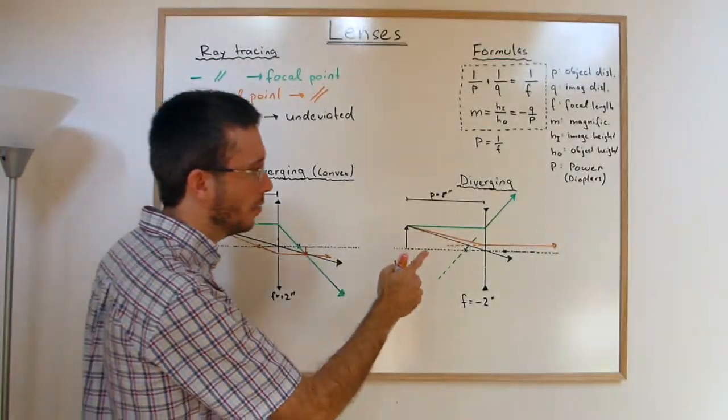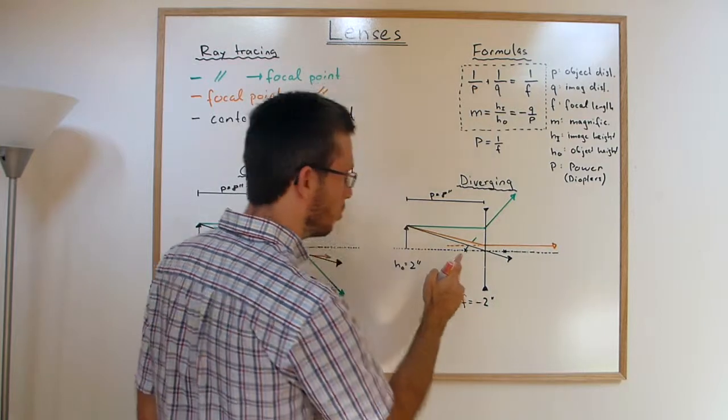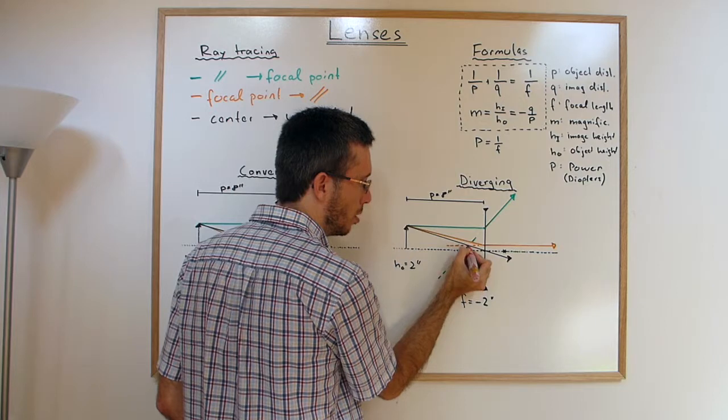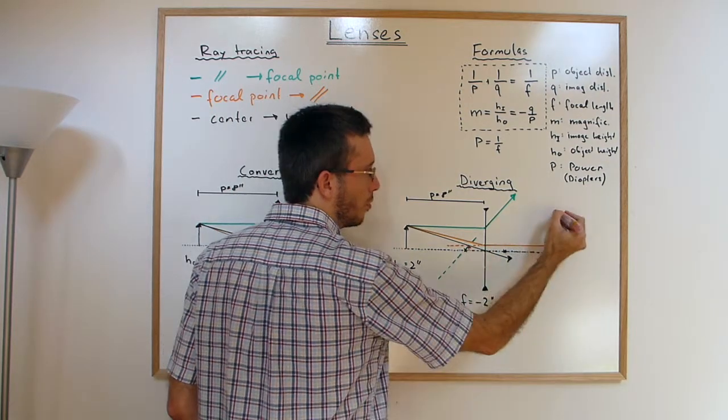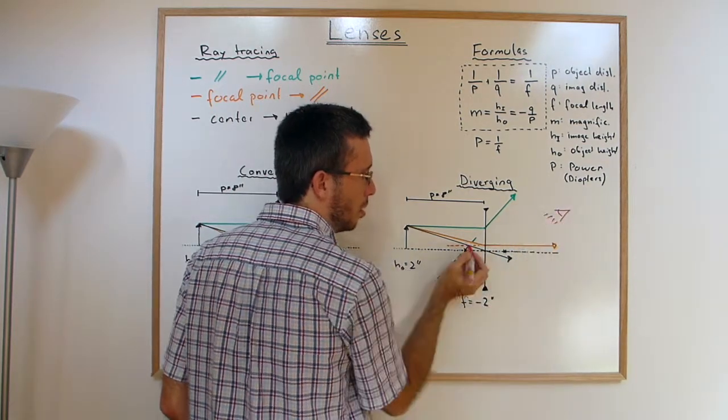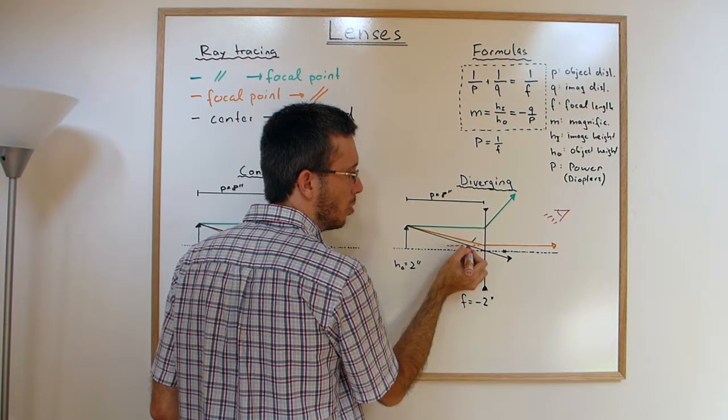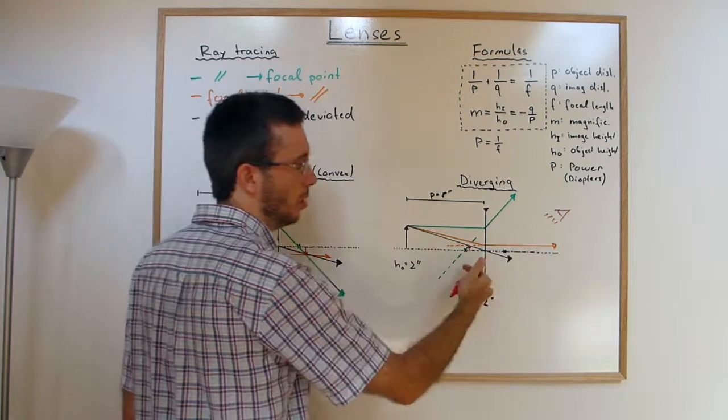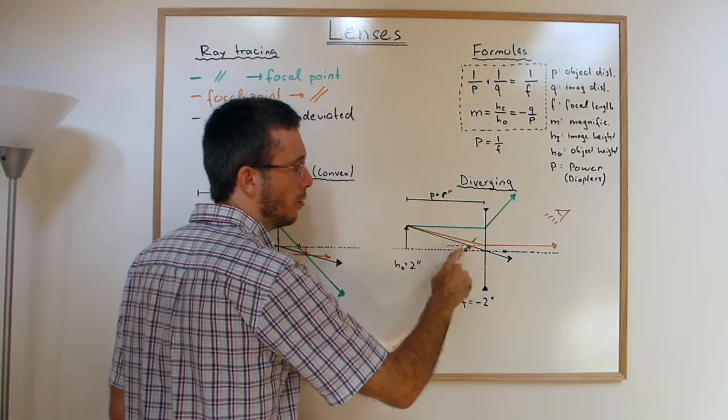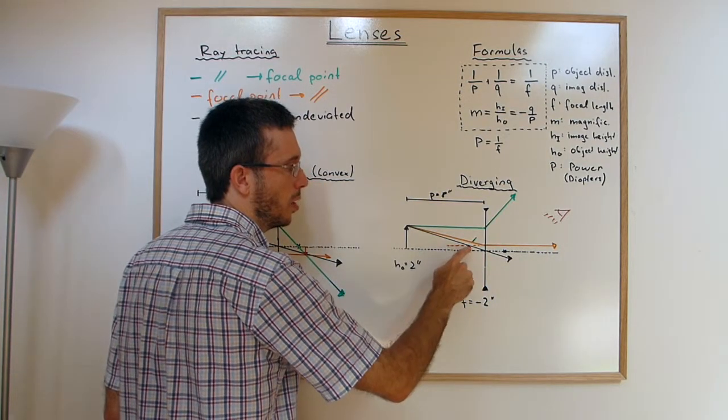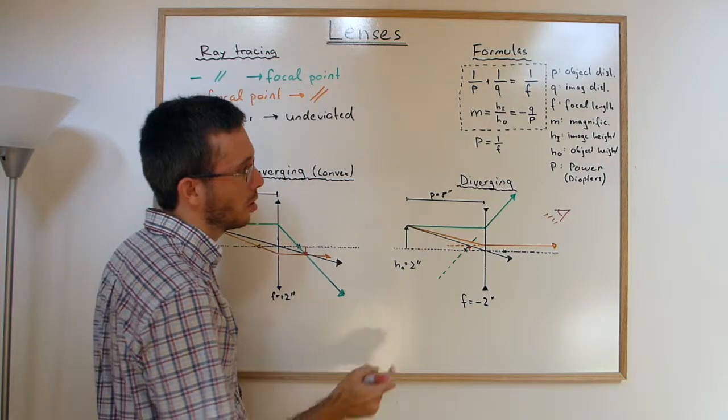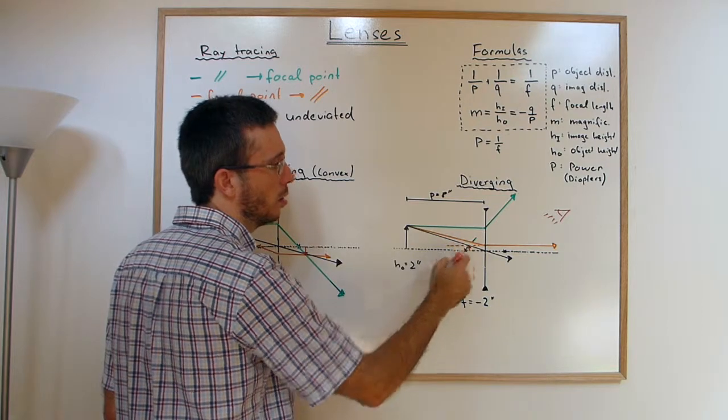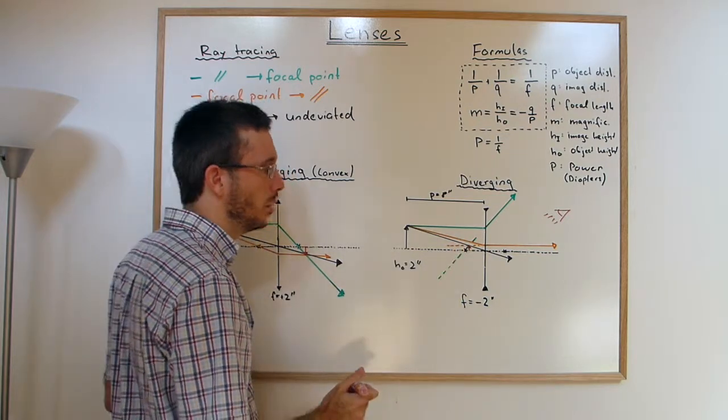In case of the diverging lens, where do my three rays appear to me? They appear to meet here. I'm looking from this side. I'm seeing them coming all from this point. So what I see is an image here behind the lens. So it's a virtual image. But the light doesn't really come from there. These two rays just appear to be coming from this direction. So for the diverging lens with an object on the left side of the focal point, I got a virtual image here.